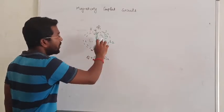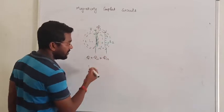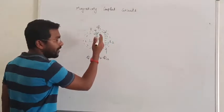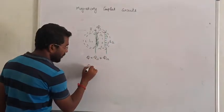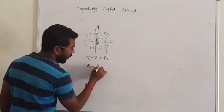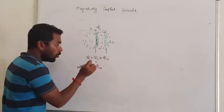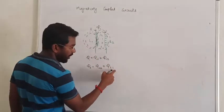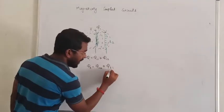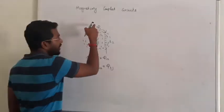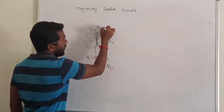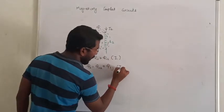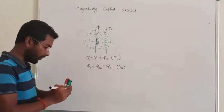Some amount of flux is going to be linked with the second coil — that is called φ12. Similarly, for the second coil, when current passes, the flux φ21 is the flux linked from the secondary to the primary, and φ22 is the flux linked only with the second coil. Let me call the primary current i1 and the secondary current i2.